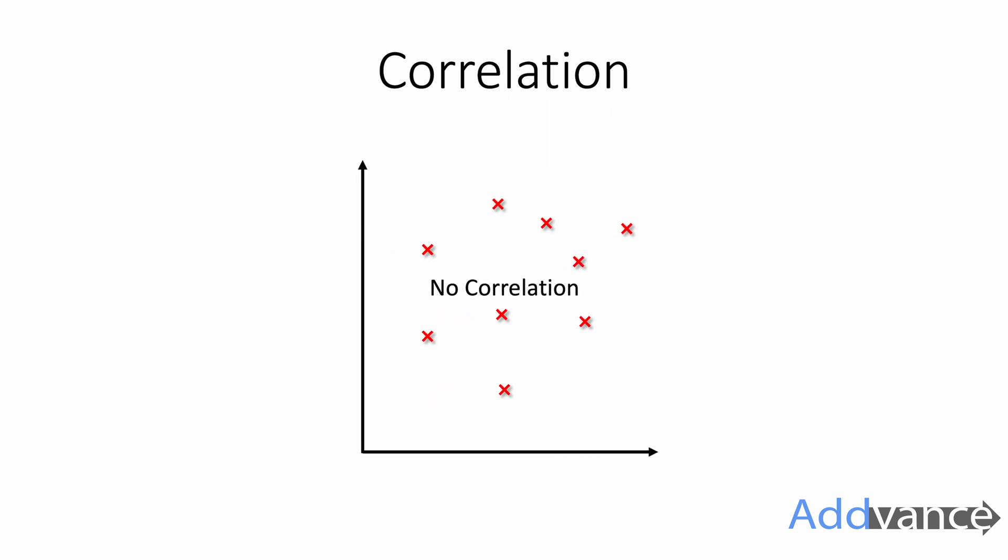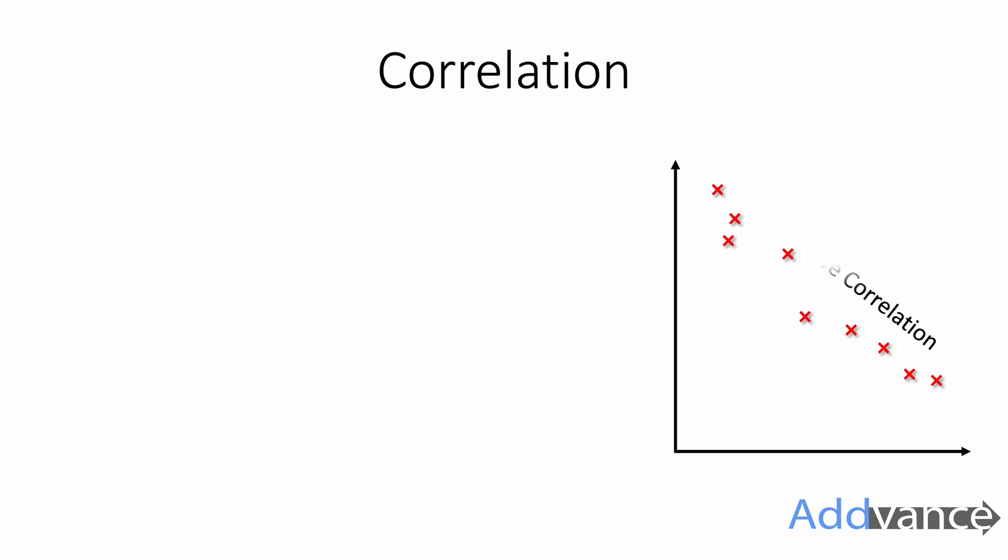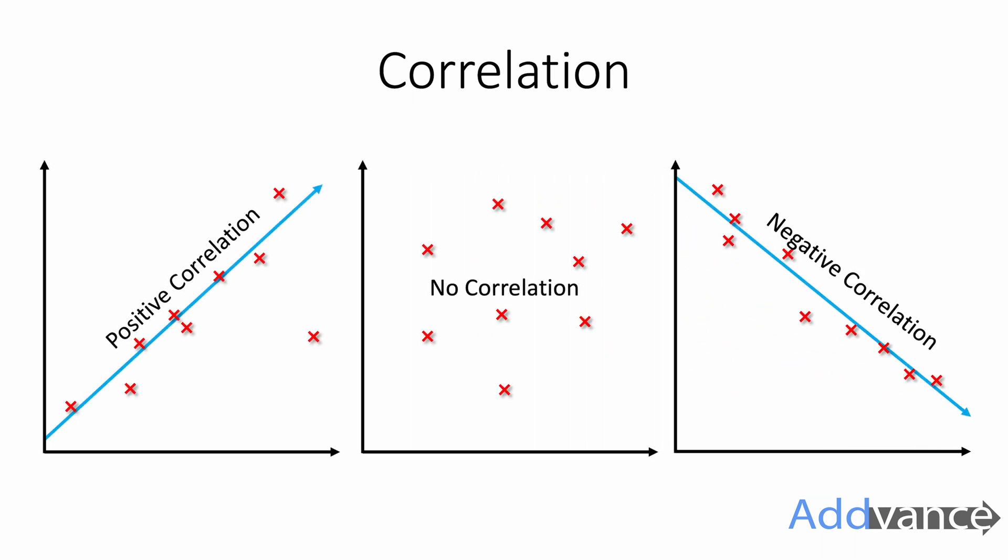This one has no correlation. There is no pattern to this data, it's just random points. And then we've also got negative correlation here where the data appears to be going downwards. We have positive correlation, no correlation and negative correlation.